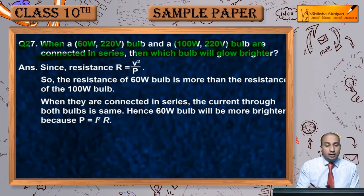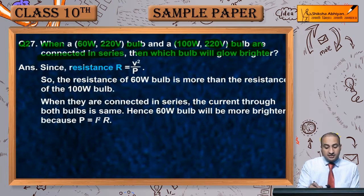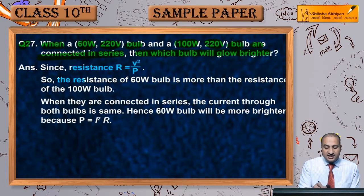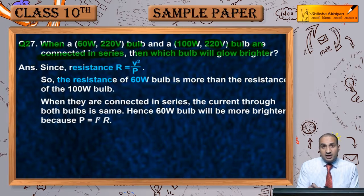Since resistance R equals V squared by P, resistance is inversely proportional to power. So when power is less, resistance will be more. The 60 watt bulb will have higher resistance.